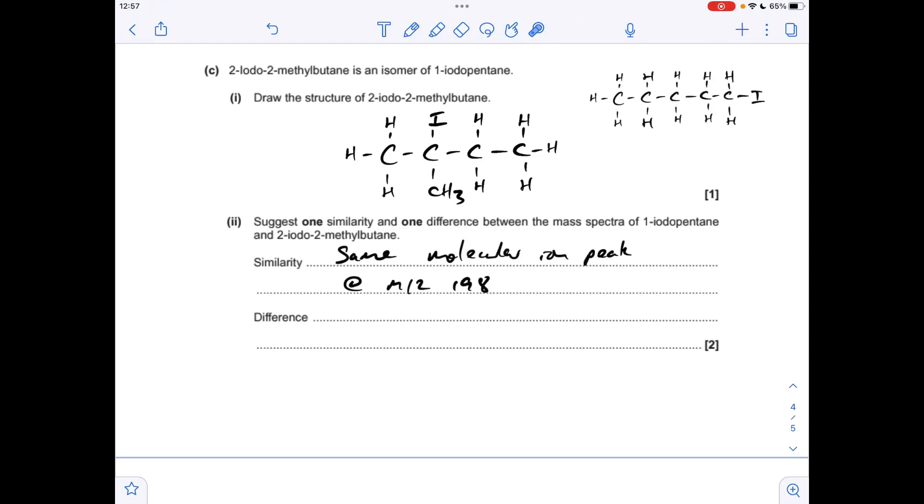The difference is going to be down to the fact that the 2-iodo-2-methylbutane can't produce that fragment peak at M over Z 43, because it doesn't contain a C3H7 structural aspect to it. So you can break that there and produce that fragment, but there's no way to produce that fragment with this.